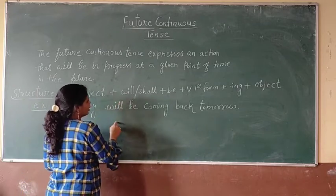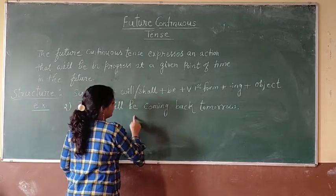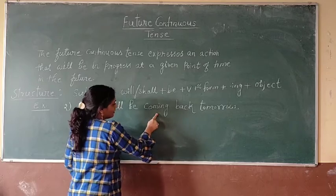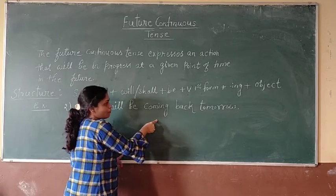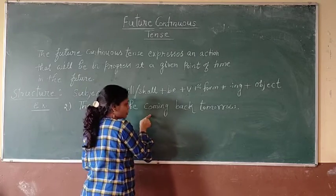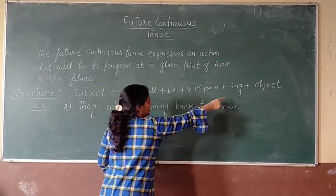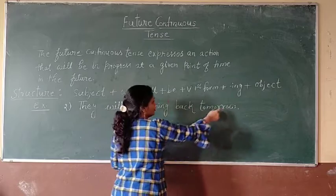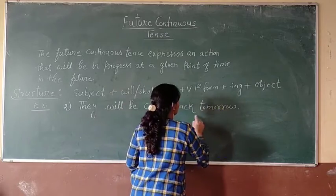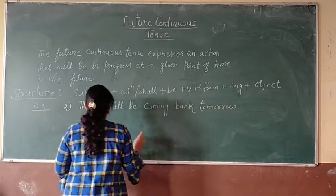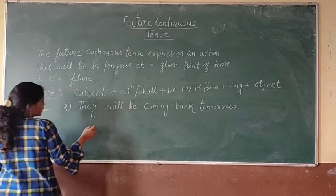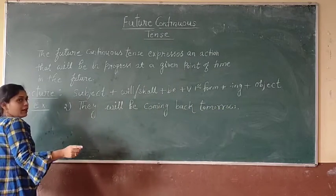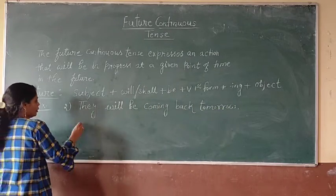'They' is the subject, then 'will', then 'be'. 'Come' is the first form of the verb, and adding -ing gives 'coming', then 'back tomorrow'. They will be coming back tomorrow.